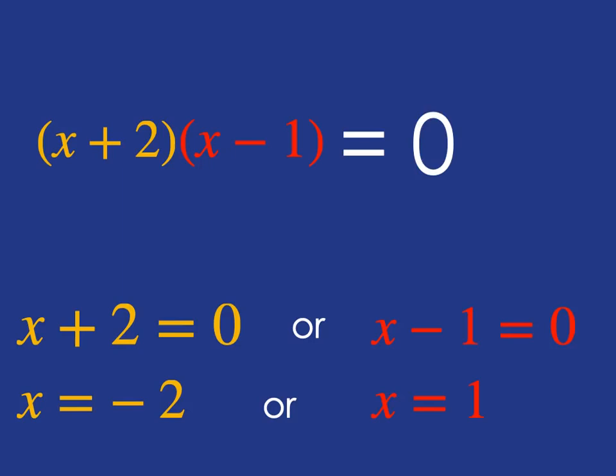And so we've now got a solution to that original equation. If x plus two multiplied by x minus one is zero, then we know that x is either minus two or it is one.